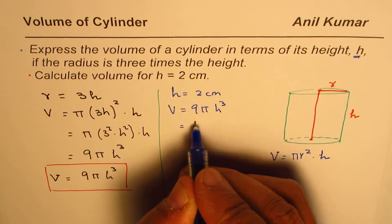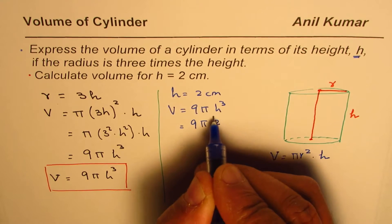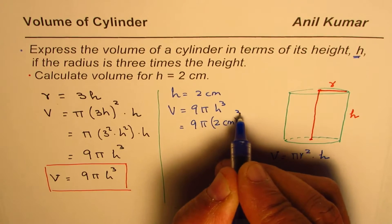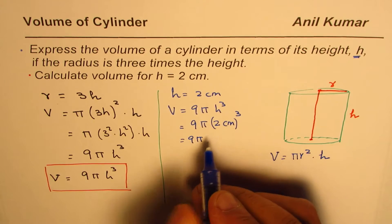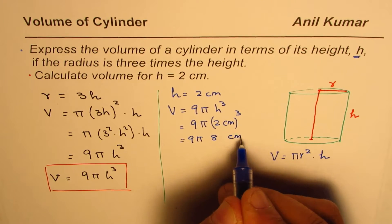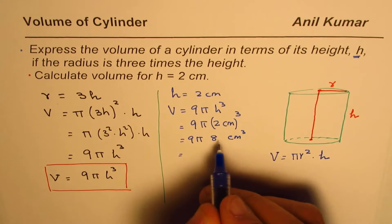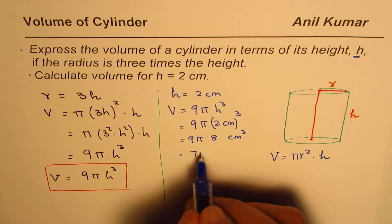Volume is 9πh³, so let's replace h with 2. So we get 9π(2 cm)³. So we get 9π, 2³ is 8, 8 cm³. And 9 times 8 is 72.